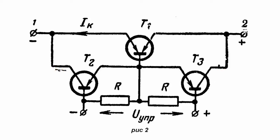The emitters of control transistors are connected to the power transistor base, and the emitter junctions are connected in parallel by R resistors.